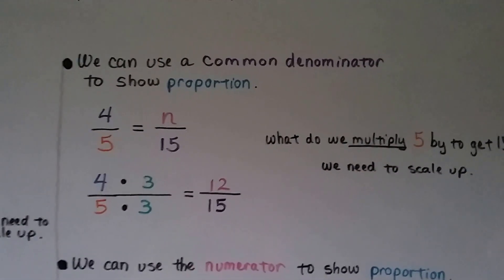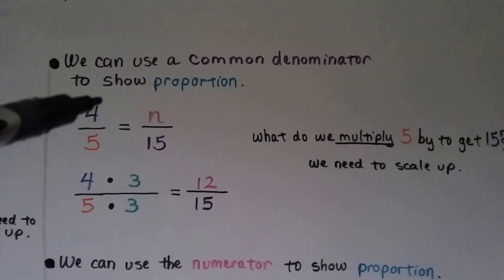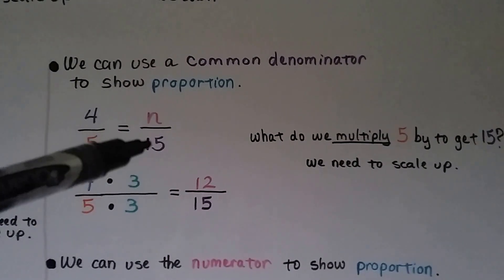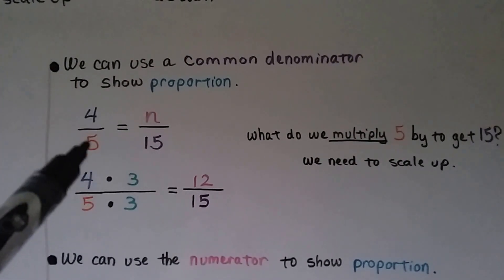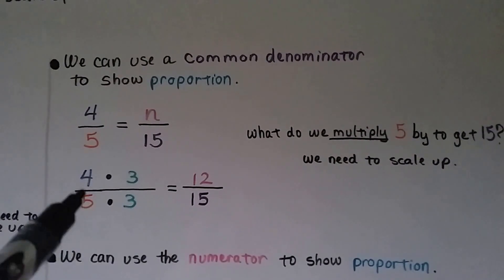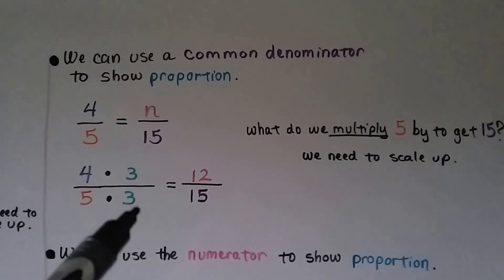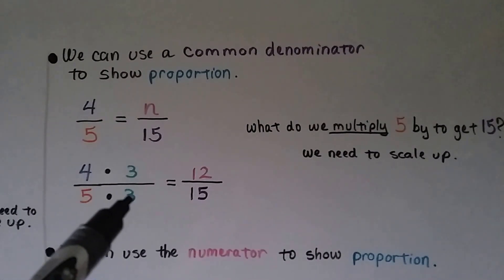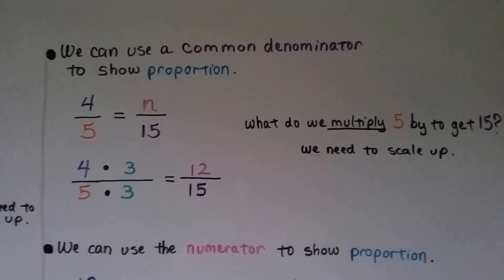We can use a common denominator to show proportion. So if we have 4 fifths and it equals some number over 15, what happened to the 5 to become a 15? It was multiplied by 3. The 4 got multiplied by 3, it became 12 fifteenths, and we scaled up.